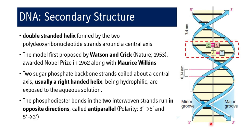The secondary structure of DNA was first proposed by Watson and Crick in 1953; they were awarded the Nobel Prize in 1962 along with Maurice Wilkins. They proposed a double-stranded helix formed by two polydeoxyribonucleotide strands wound around a central axis.